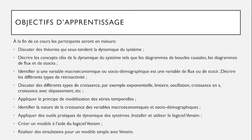On peut prendre l'exemple du nombre de cas de coronavirus observé dans certains pays. La COVID est partie de la Chine en 2019 et s'est étendue au monde entier, avec un nombre de nouveaux cas déclarés par jour suivant des évolutions très importantes — on parlerait de croissance exponentielle. Nous allons aussi appliquer les principes de modélisation des séries temporelles, identifier la nature de la croissance des variables macroéconomiques et socio-démographiques, et voir comment ces variables interagissent.